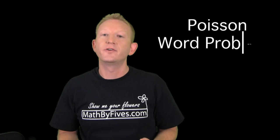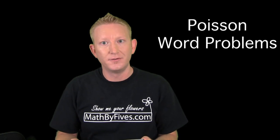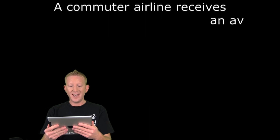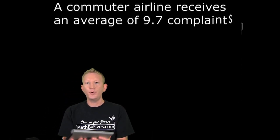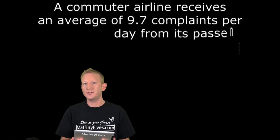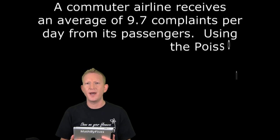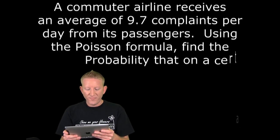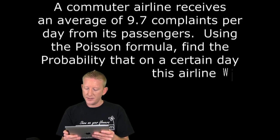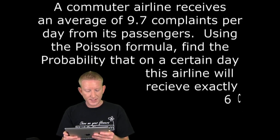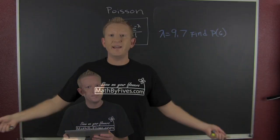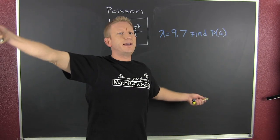It's time to do some word problems for the Poisson distribution. A commuter airline receives an average of 9.7 complaints per day. Using the Poisson formula, find the probability that on a certain day this airline will receive exactly six complaints.